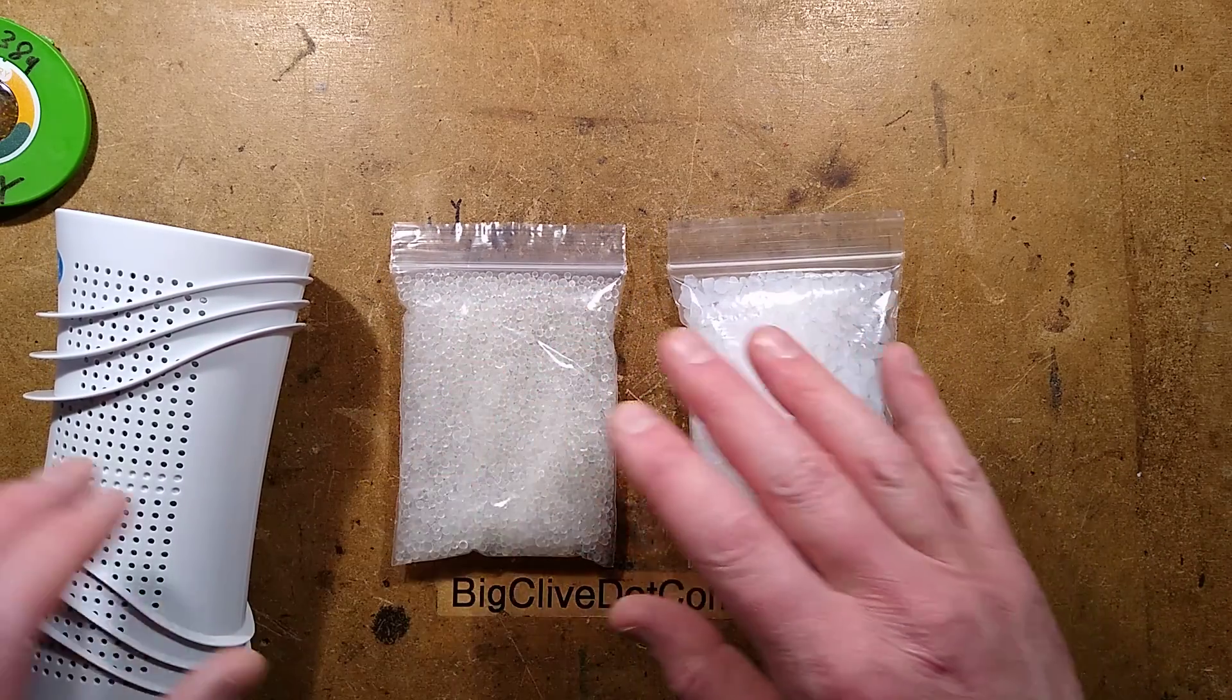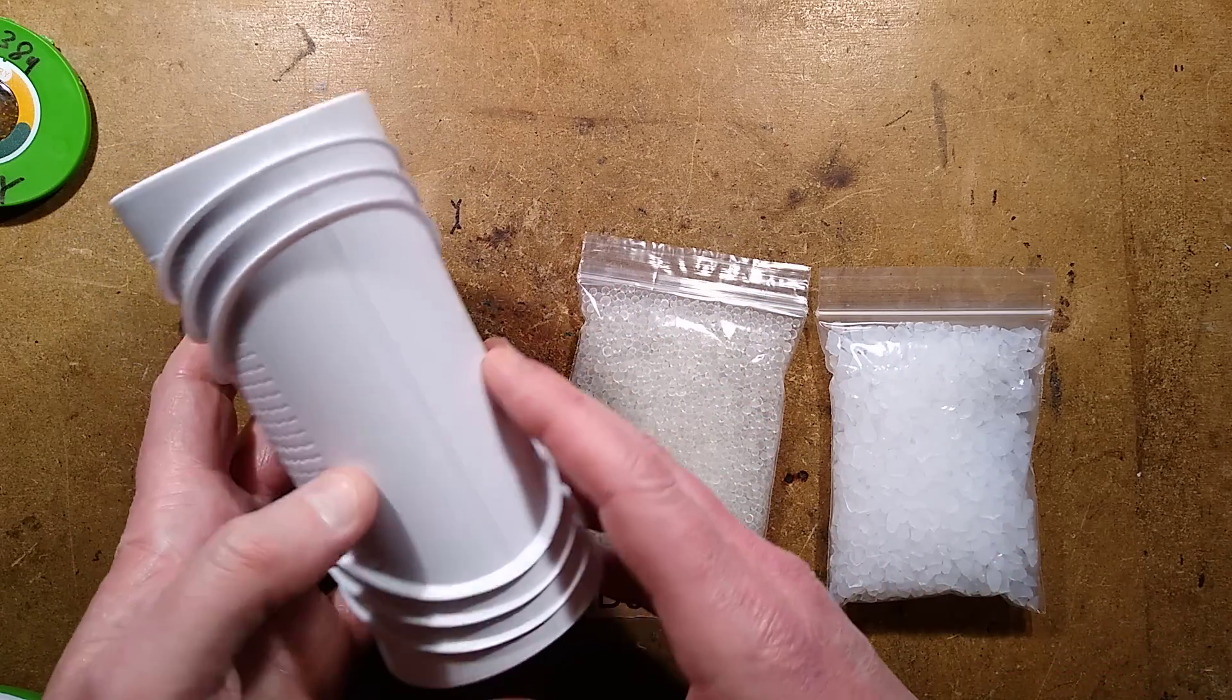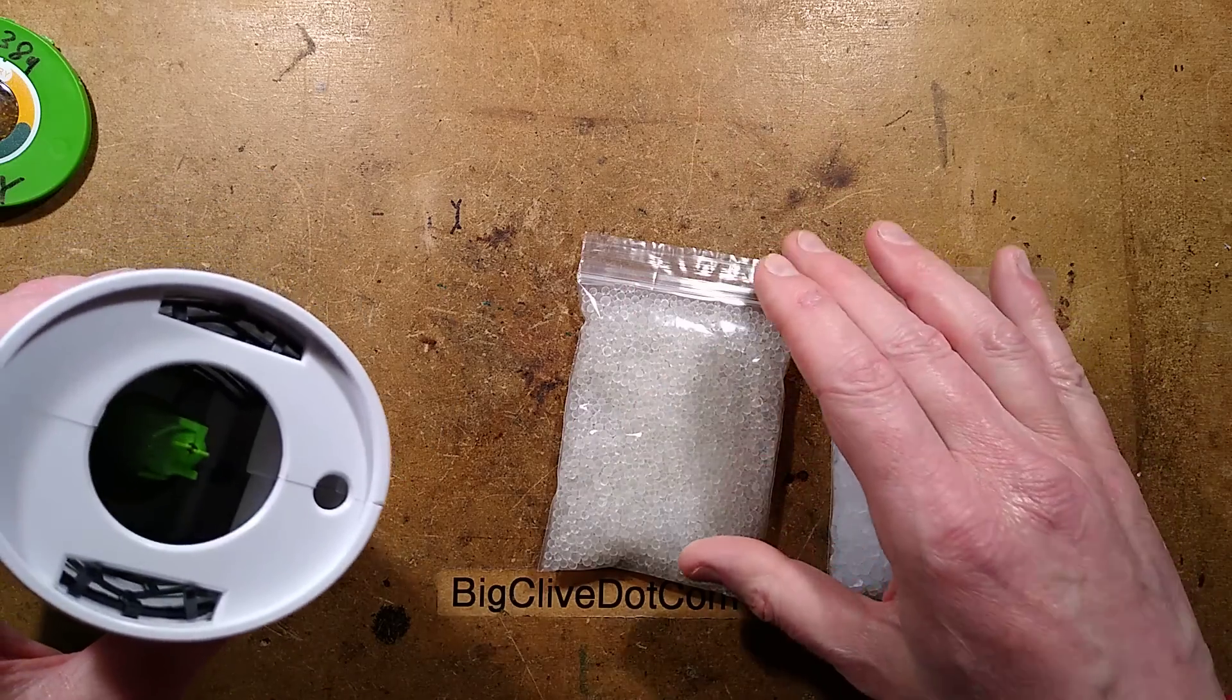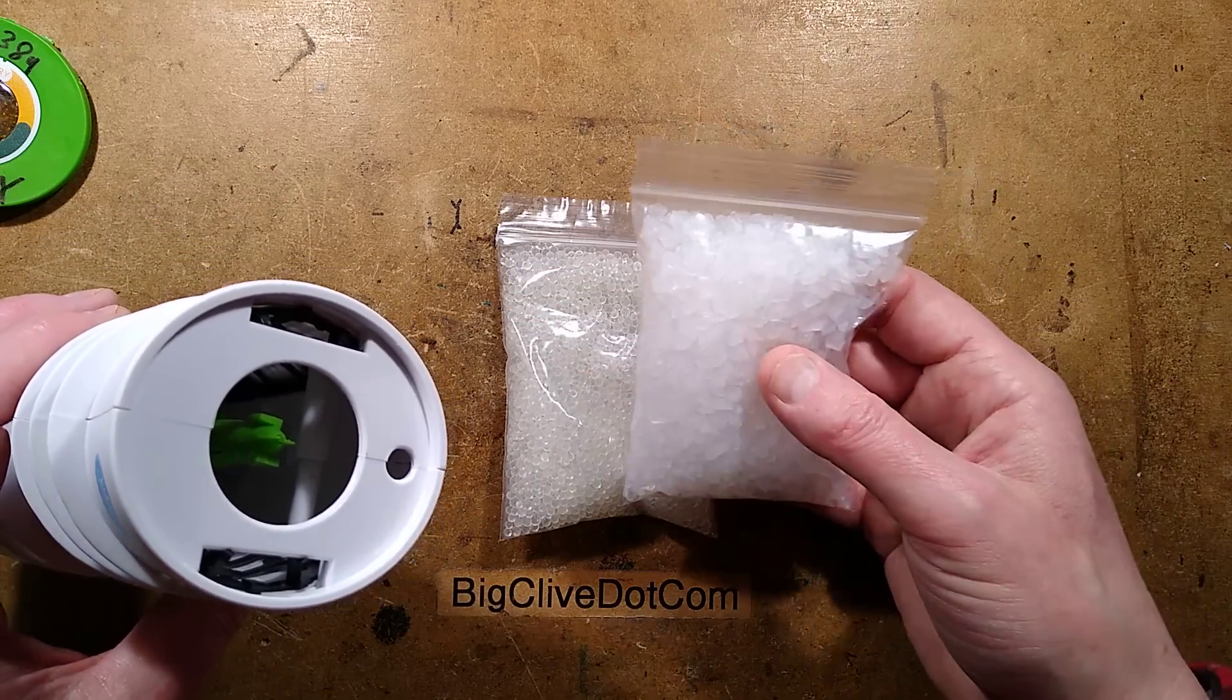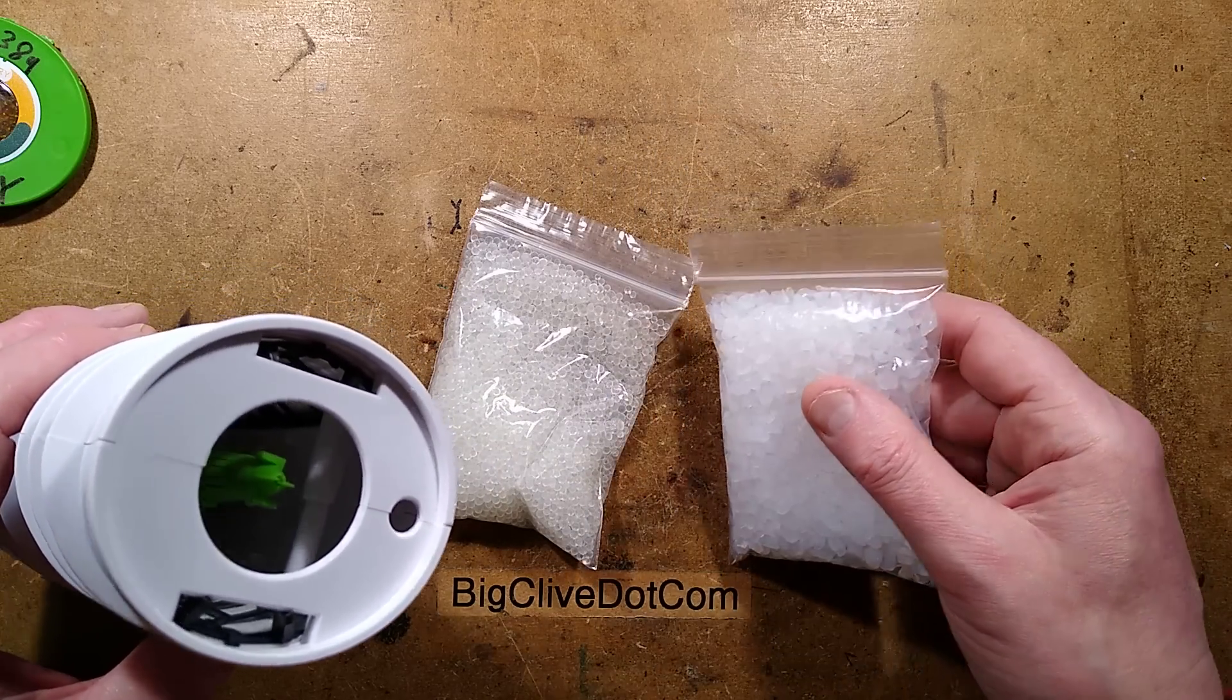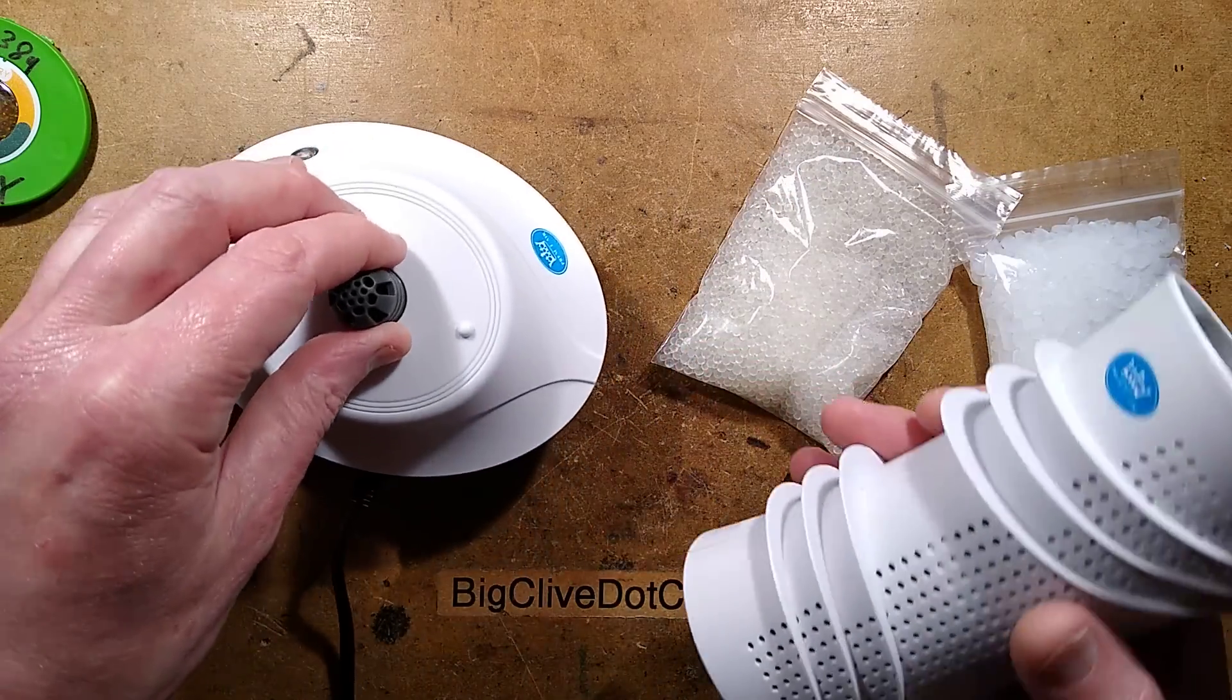So to test this I got some of these modules. Now these are actually dehumidifier modules that are rechargeable in the sense you can dry them out by blowing hot air in and they're normally filled with the silica gel beads. I emptied one out and I filled it with the Bob Martin Felite crystal cat litter and then I put both units on this device.